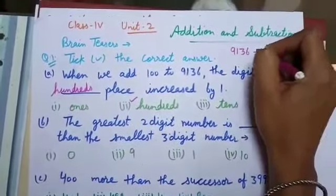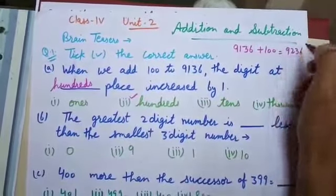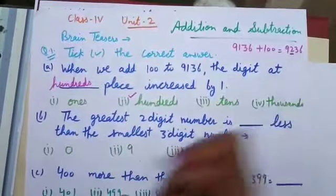9136 add 100 to it, then the answer is 9236. It means the digit at 100 place will change.